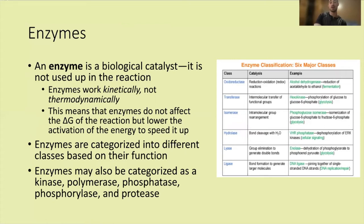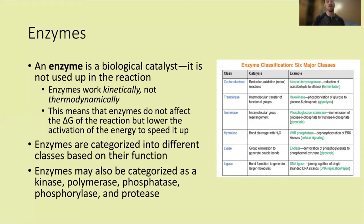Enzymes are categorized into different classes based on their function. The six major classes are oxidoreductases, transferases, isomerases, hydrolases, lyases, and ligases — definitely be familiar with what each does. You may also see enzymes categorized as kinases, polymerases, phosphatases, phosphorylases, and proteases. These all fit into one of those six major classes, and you should know what all of them do.